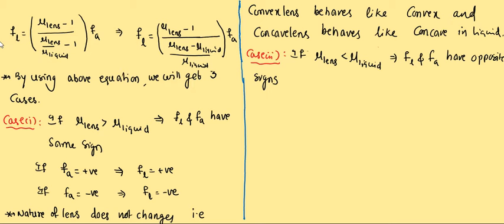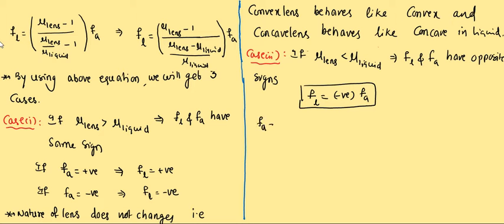So FL is the negative of FA in sign. If FA is positive, FL becomes negative. If FA is negative, FL becomes positive. The nature of the lens changes — convex behaves like concave because its focal length changes from positive to negative.